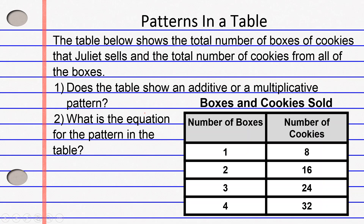Here's our first example. The table below shows the total number of boxes of cookies that Joyette sells and the total number of cookies from all of the boxes. Does the table show an additive or multiplicative pattern? And what is the equation for the pattern in the table? The table is titled Boxes and Cookies Sold. On the left-hand side, we have number of boxes going from 1 to 4, and on the right-hand side, we have number of cookies going from 8 to 32.